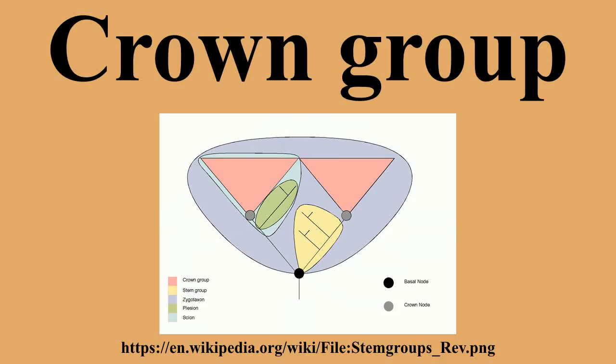A stem group is a paraphyletic group composed of a pan group (total group) minus the crown group itself. This leaves primitive relatives of the crown groups back along the phylogenetic line to the last common ancestor of the crown group and the nearest living relatives. It follows from the definition that all members of a stem group are extinct.